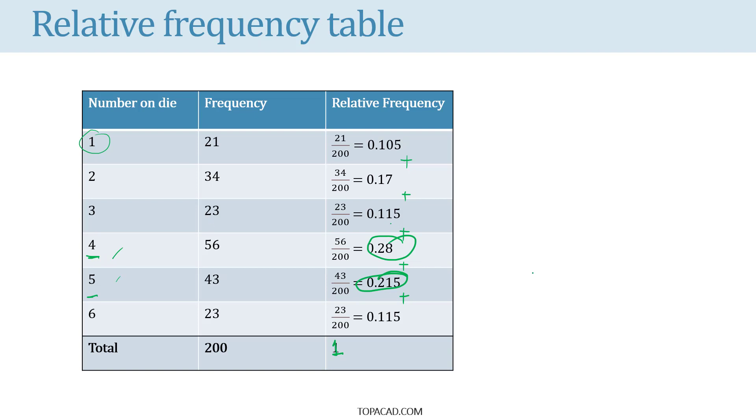Normally, in an unbiased die, all the numbers are equally likely to show up. But in this particular die, number 4 or 5 are more likely to show up. That's why we can say, based on the results of this experiment, this die is biased.